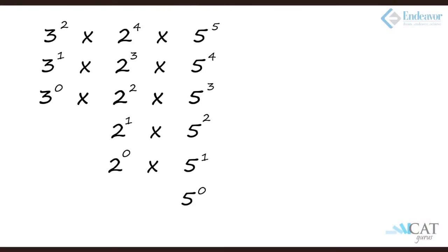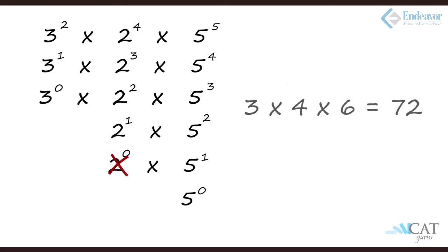Now, what are the even factors of 4,50,000? To find even factors we must eliminate 2 to the power 0 from the 2-series, since 2⁰ = 1 makes the factor odd. Any term containing at least 2¹ will be even, but combining with 2⁰ gives an odd number. So for 3 we still have 3 options, for 2 only 4 options remain (2⁴, 2³, 2², 2¹), and for 5 we have 6 options. So 3 × 4 × 6 = 72 even factors of 4,50,000.